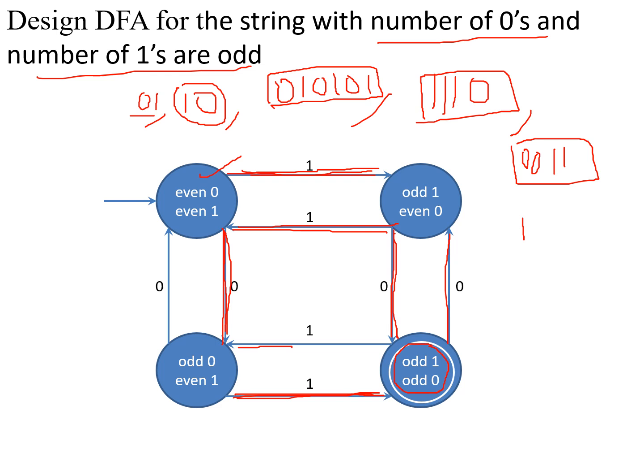When your string has odd number of ones and even number of zeros, this state becomes the final state. When your string has odd number of zeros and even number of ones, this other state is the final state. If you understand one problem, you can answer the three remaining problems by just changing the final state. Please comment if you have any doubts, and keep subscribing to our channel.